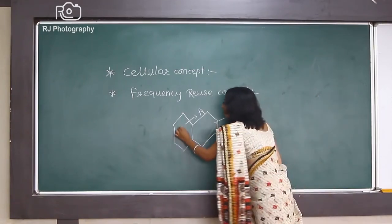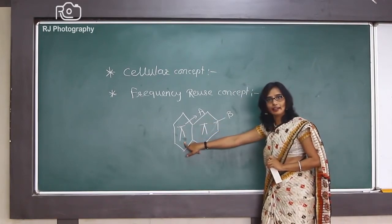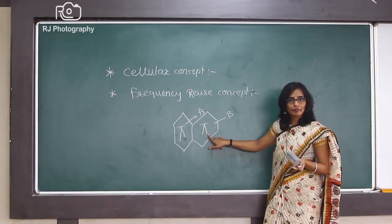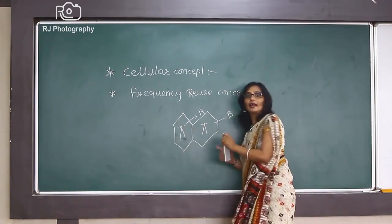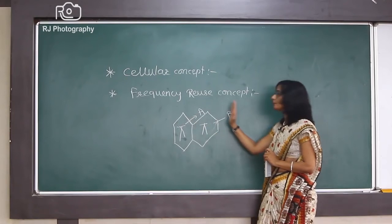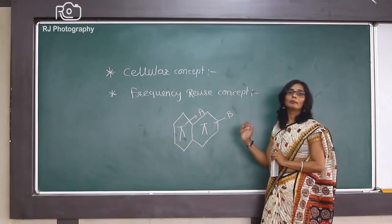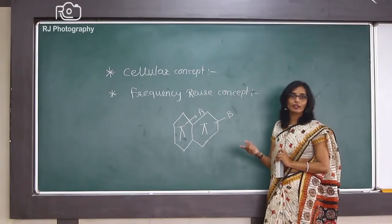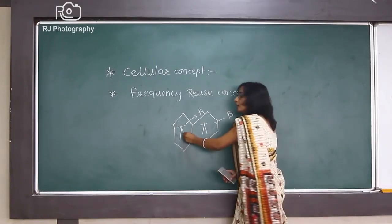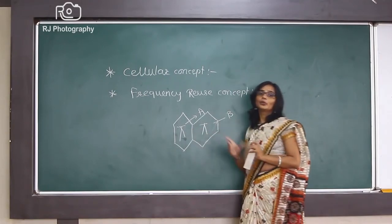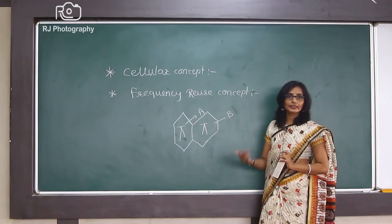If the two base stations located at the center of cell A and cell B are working on the same frequency, then when users of cell A are communicating and users from cell B are also communicating, there may be interference, which is unwanted in mobile communication. So the requirement is that two adjacent cells should not use the same frequency. Then how do we go about frequency reuse?